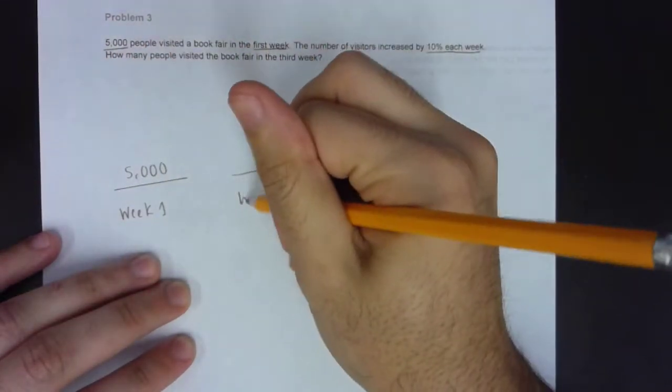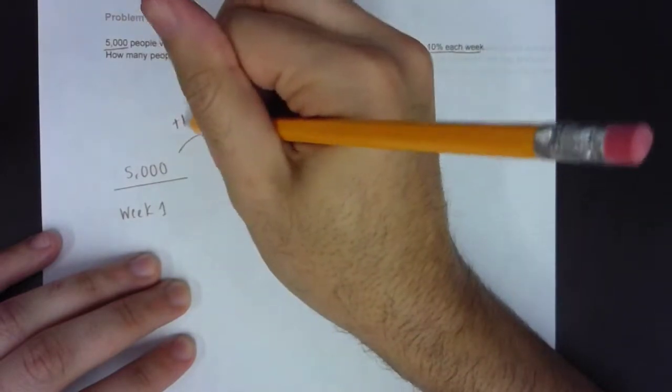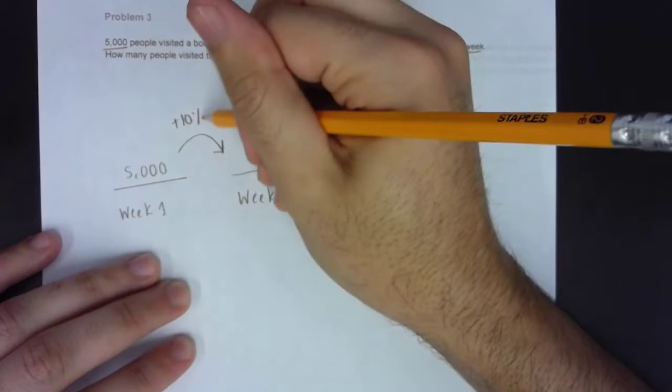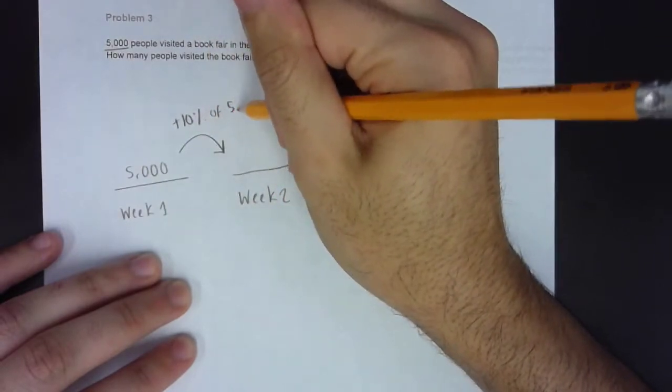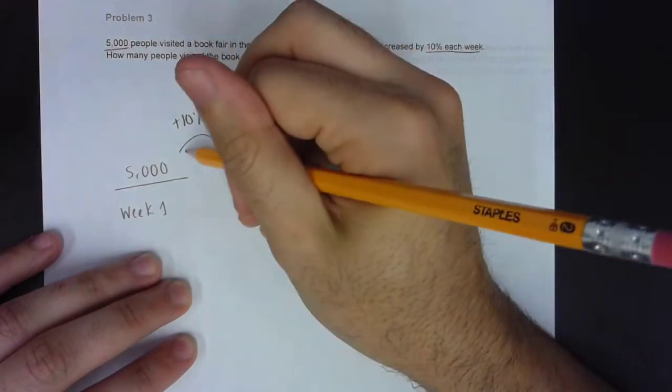then by the time week two comes around, there's going to be a 10% increase. Again, notice where that arrow is coming from. It is a 10% increase from the 5,000. If it's a 10% increase of the 5,000, you know that there are 500 more visitors this time around.